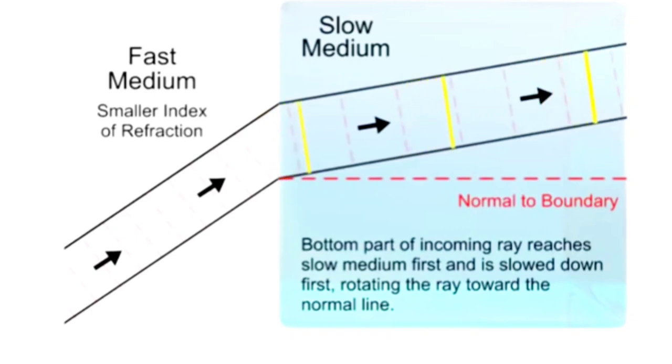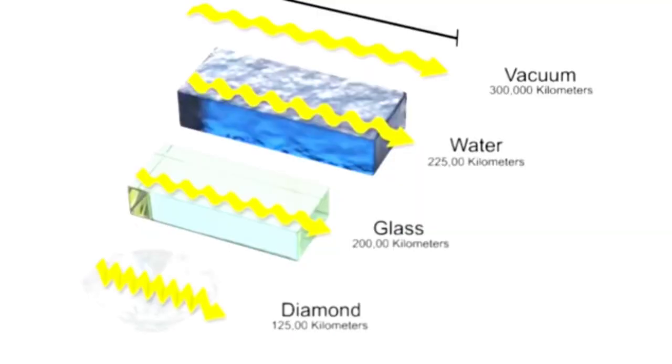This is an imaginary line drawn perpendicularly to the surface of the material. Transparent materials have what is called a refractive index.